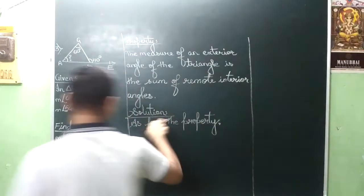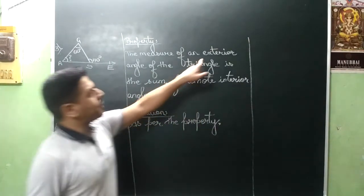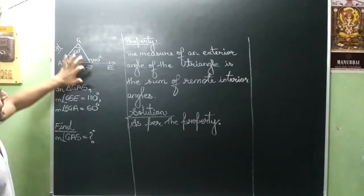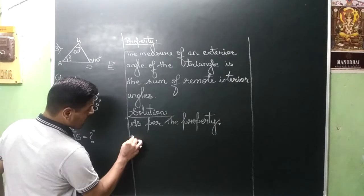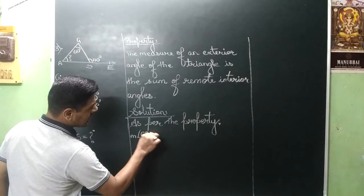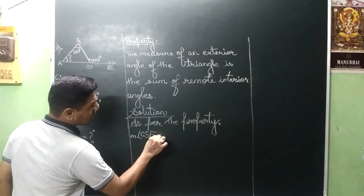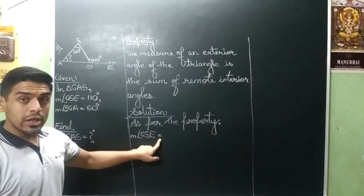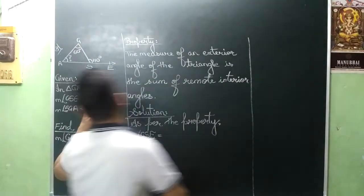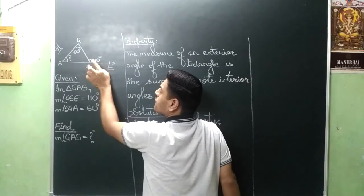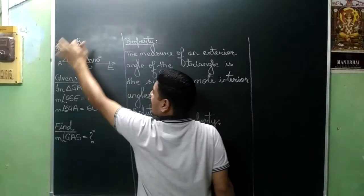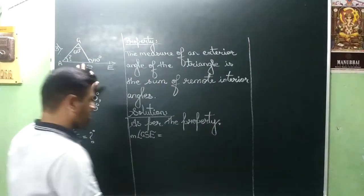You should write your solution as per the property. Once again, first exterior angle. The exterior angle of the triangle, that is GSE. Measure angle GSE is equal to sum, sum means plus. What to add? The far away angles, so these are the remote interior angles. One angle G is also there, so we start.